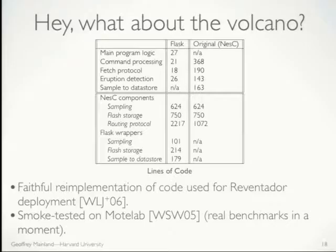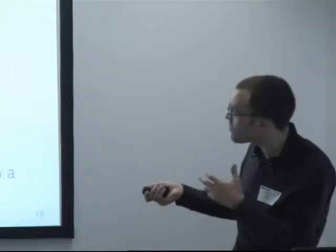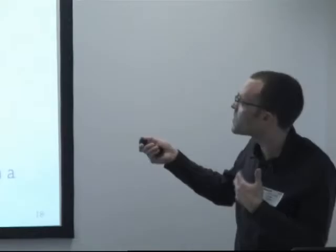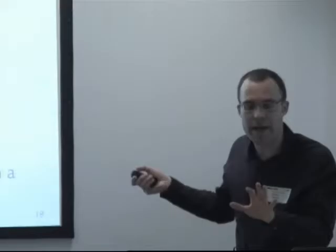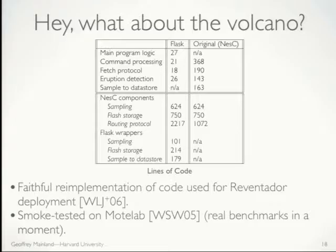We re-implemented the code deployed on Reventador using the Flask system, trying to be as faithful as possible to the original implementation, and smoke-tested it on Motelab — a test bed running real sensor node hardware, about 160 nodes. Here's a comparison of the lines of code required for the logic in the main part of the program: our Flask implementation compared to the Nessie implementation. Why is it so much smaller? Because we can use the combinators I showed earlier in the detect example — high-level combinators to very concisely specify the operation of the program.